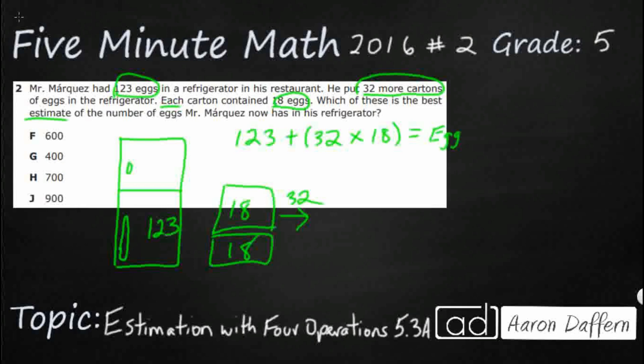Now we are needing to round. So, let's say 123, we're going to round it to the hundreds place, let's just say that's 100. Let's go to the largest place value, we're going to round the 32 to the tens place, that's 30. We're going to round our 18 up to the tens place, that's going to be 20. So, let's see what that looks like.